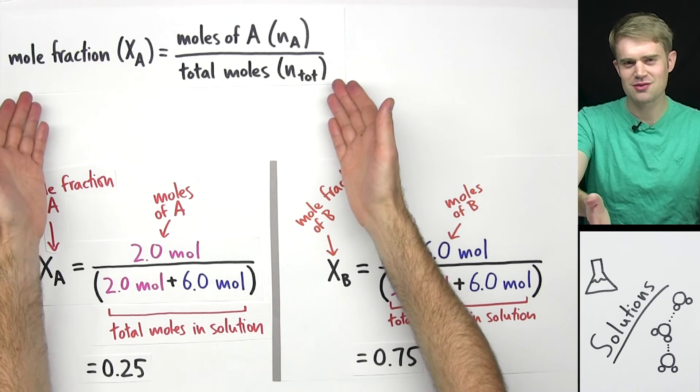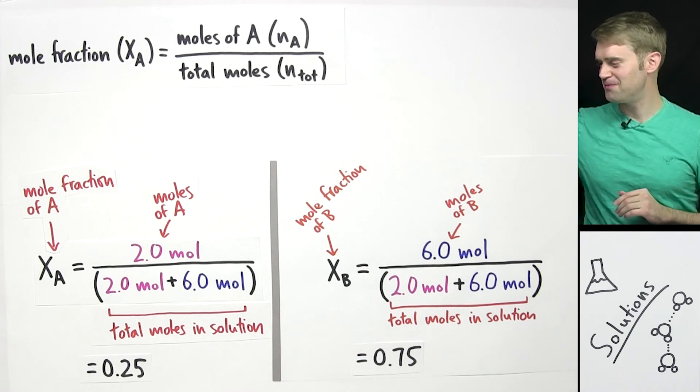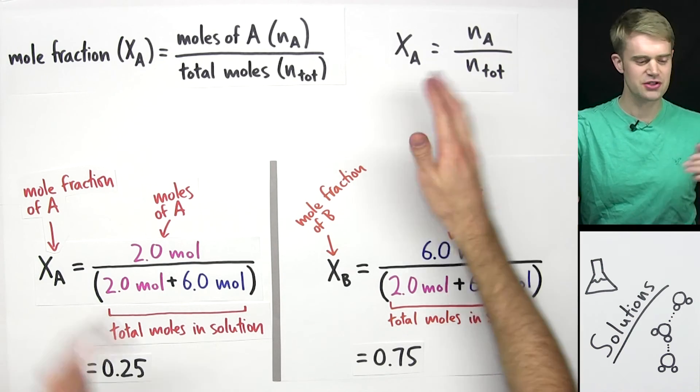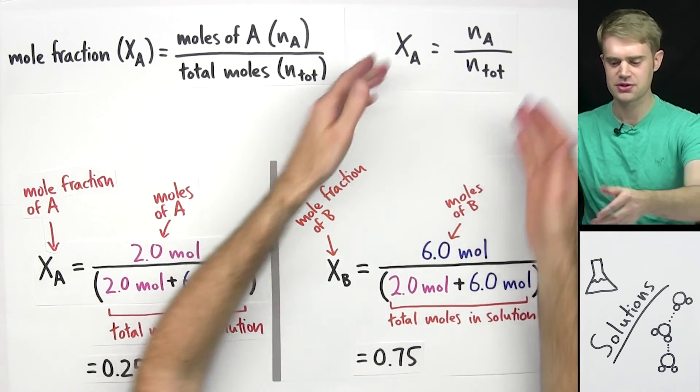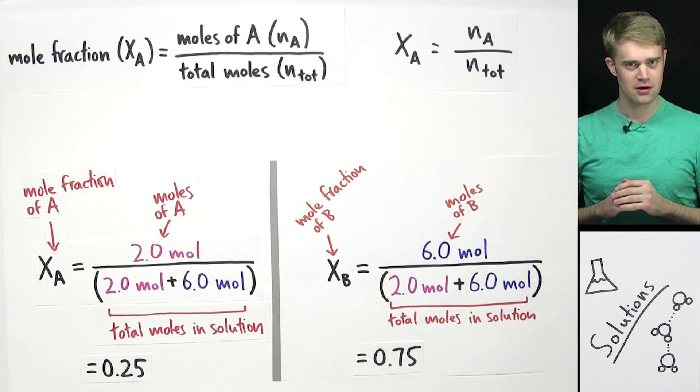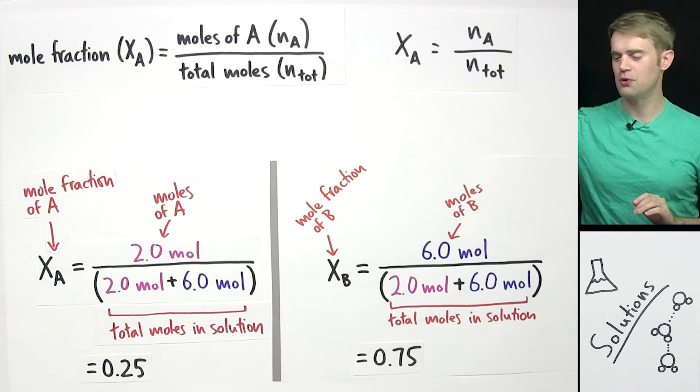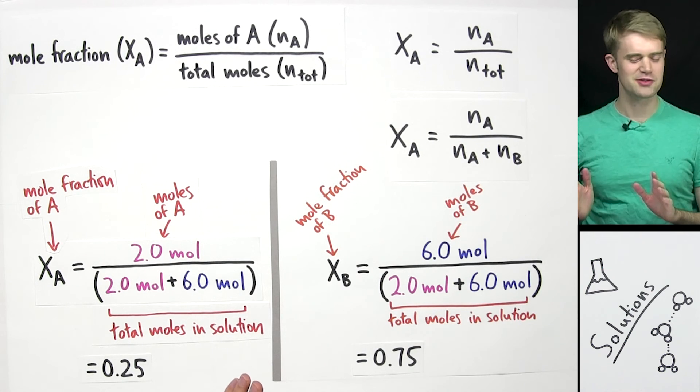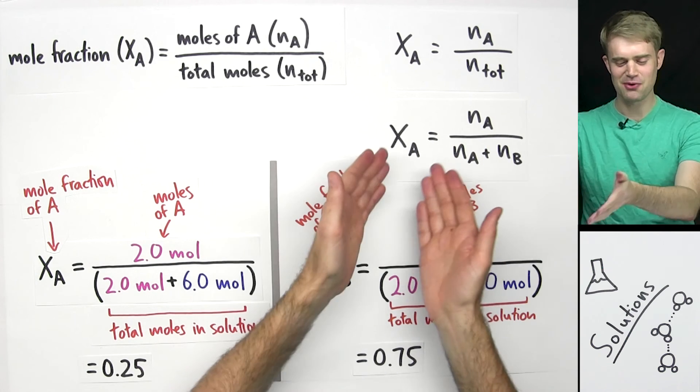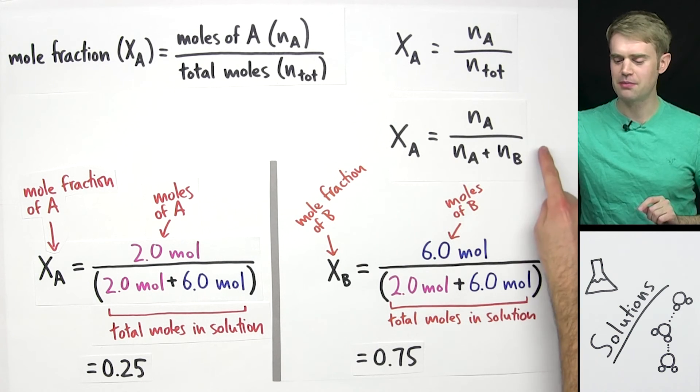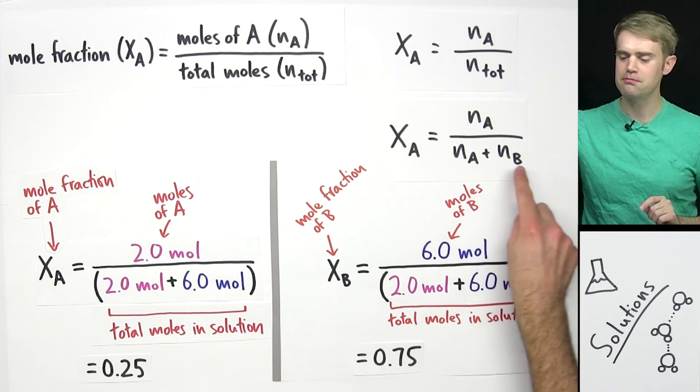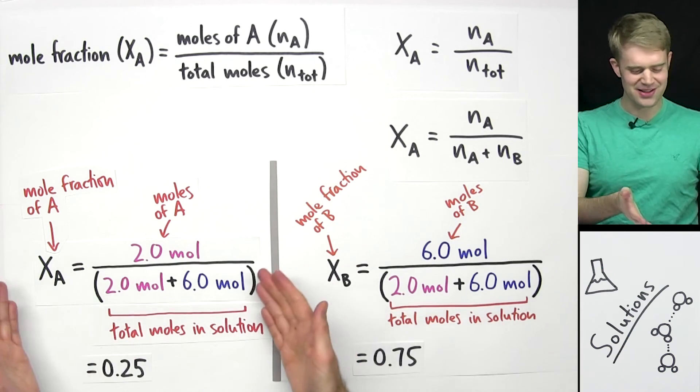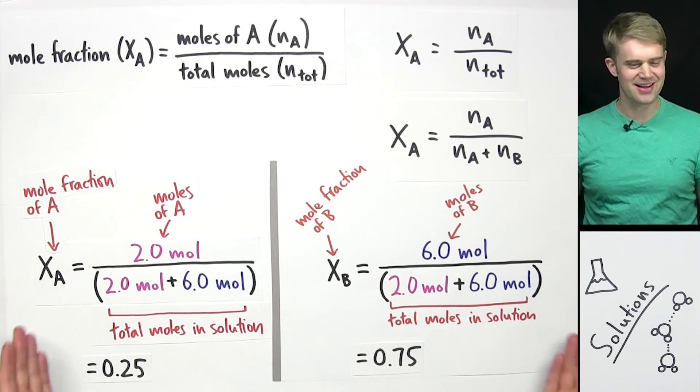There are some other versions of this equation that you might run into as well. Here is kind of an abbreviated version of this equation that just has the symbols instead of the words. And there is another version of the mole fraction equation that you might run into. I don't like this one as much. This has mole fraction of A equals moles of A divided by moles of A plus moles of B. Now this is exactly what we did here, so why don't I like it?